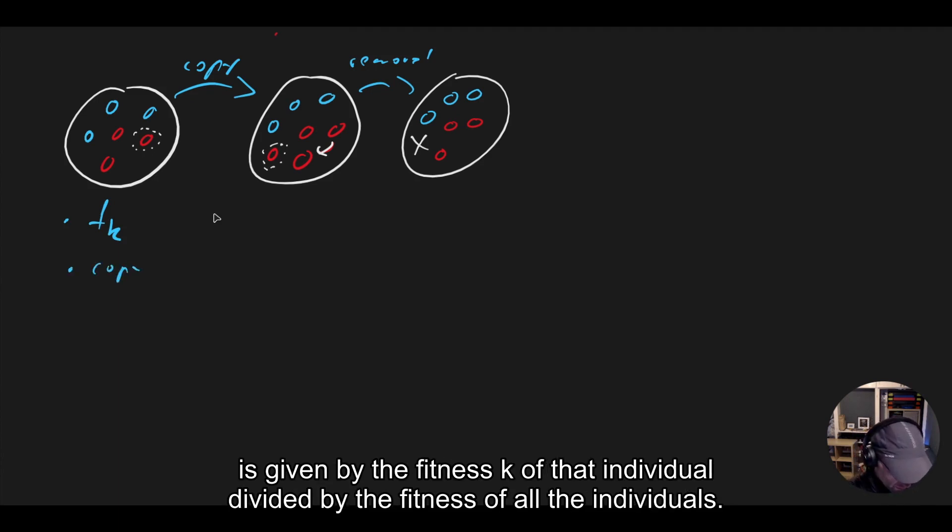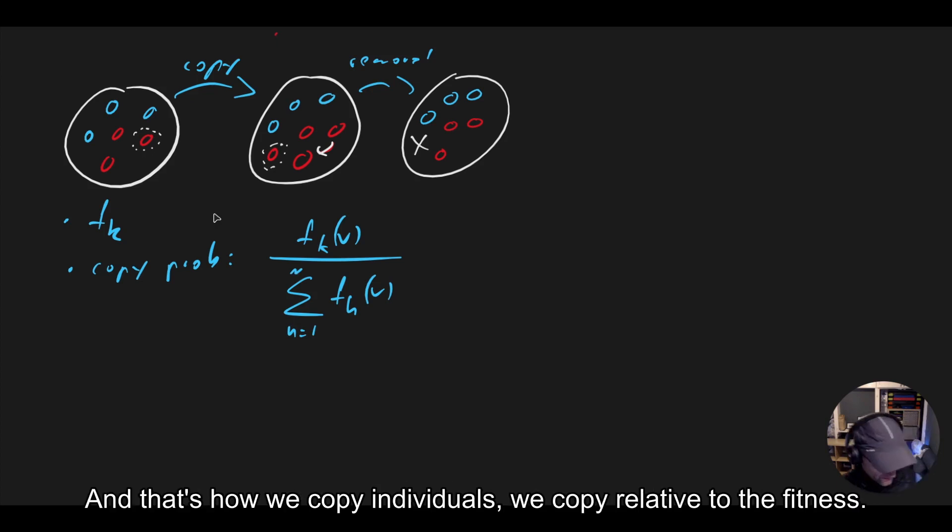The copy probability is given by the fitness K of that individual divided by the fitness of all the individuals. And that's how we copy individuals. We copy relative to the fitness.